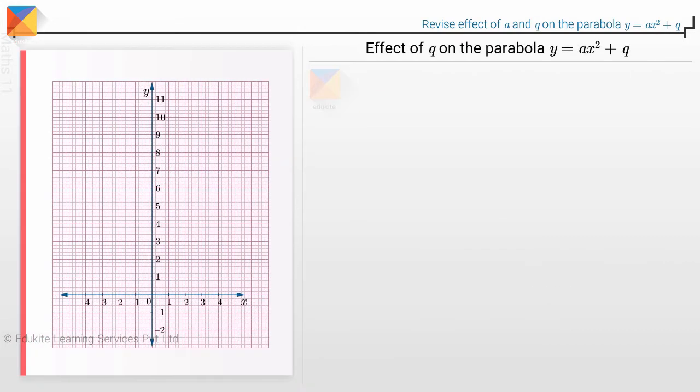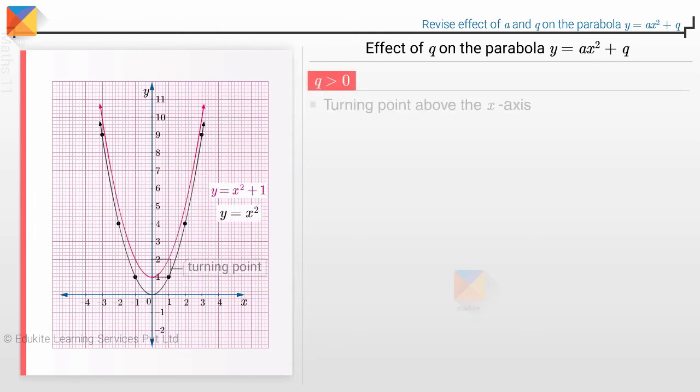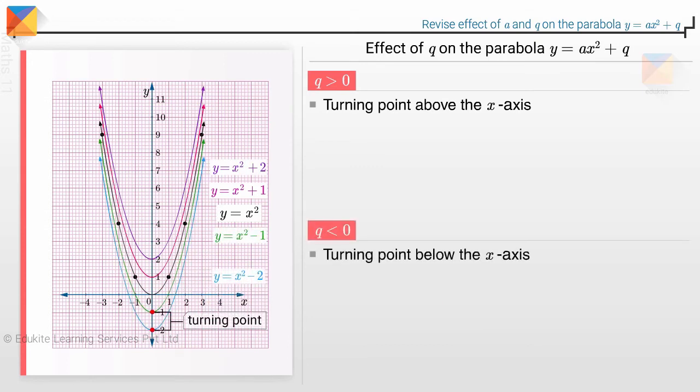Now let us revise the effect of Q on the parabola y equals ax squared plus Q. We saw that the parabola has its turning point above the x-axis when Q is positive, whereas it is below the x-axis when Q is negative. Parameter Q does not change the shape of the parabola.